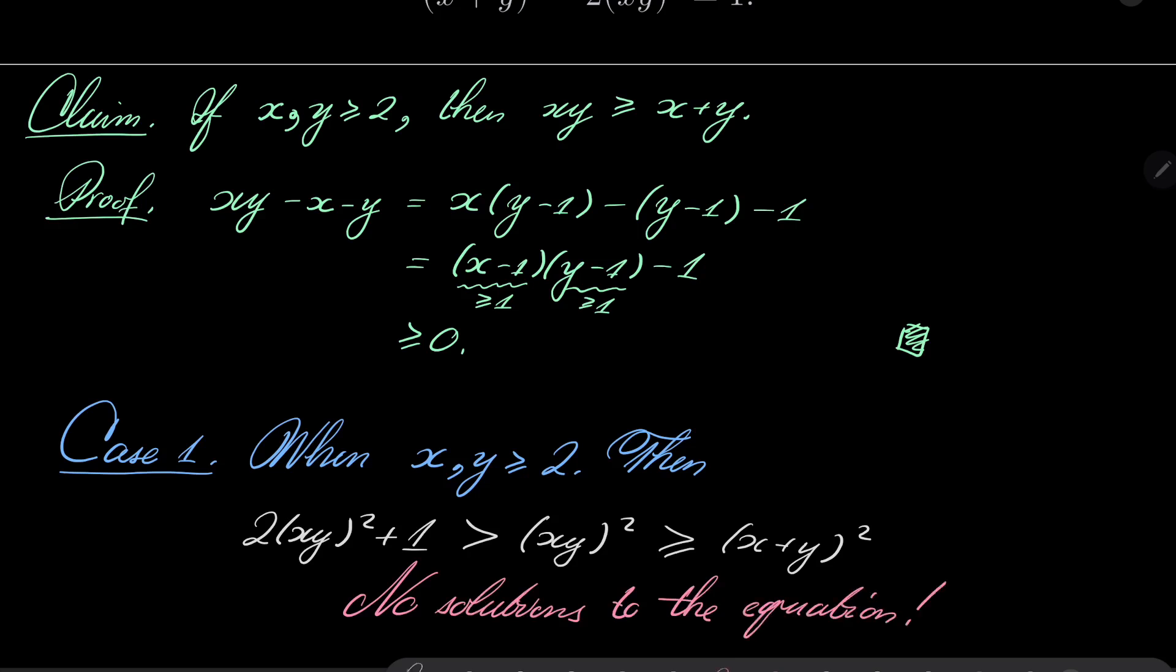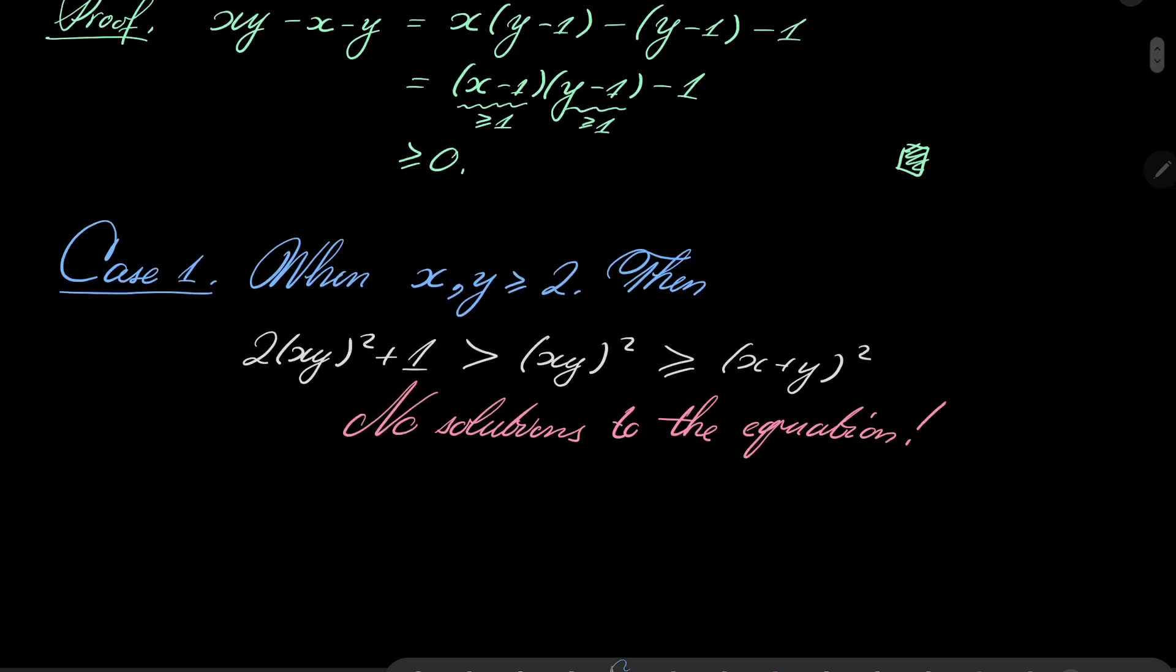Alright, so we have already eliminated most of the cases. Case 2, well, now we know that one of the numbers must be 1. Let's suppose that y = 1.